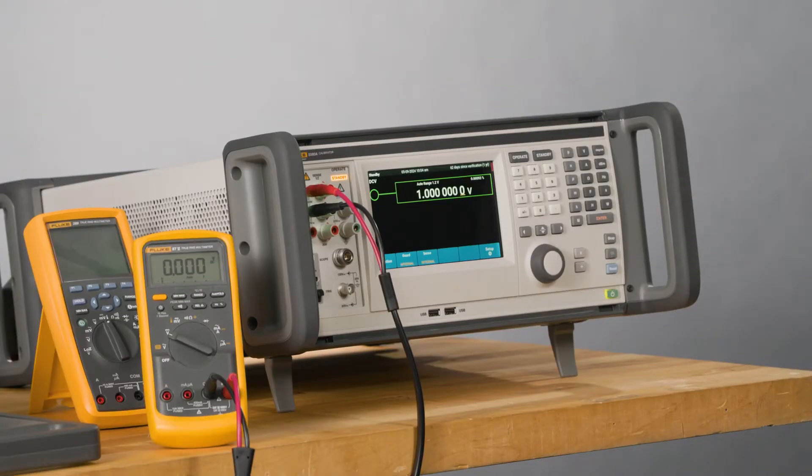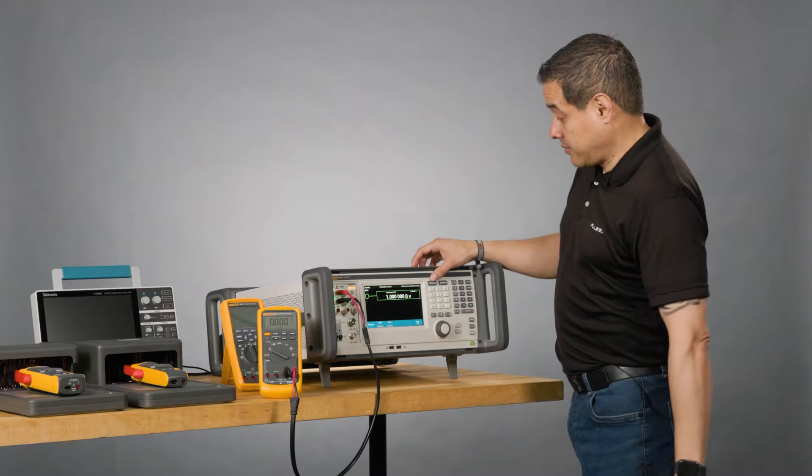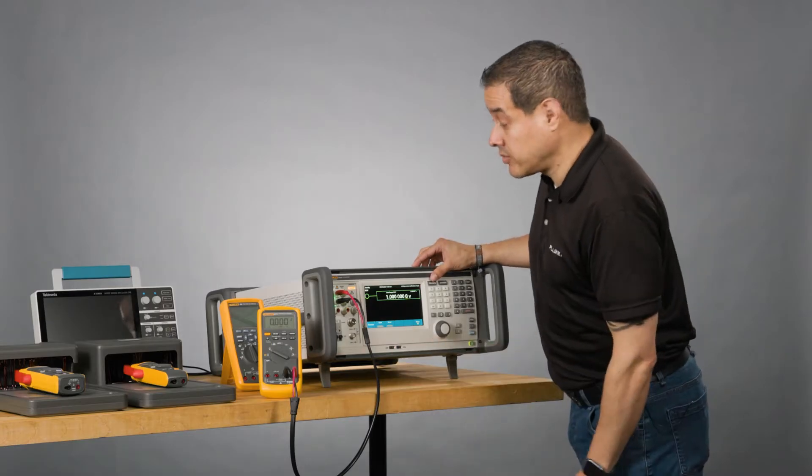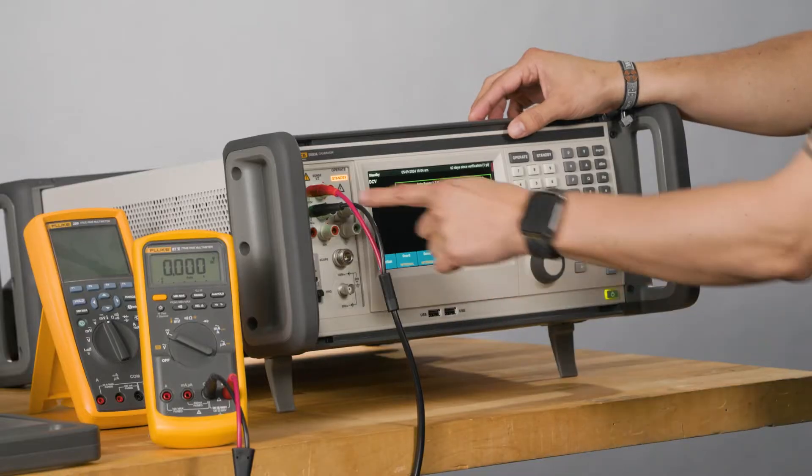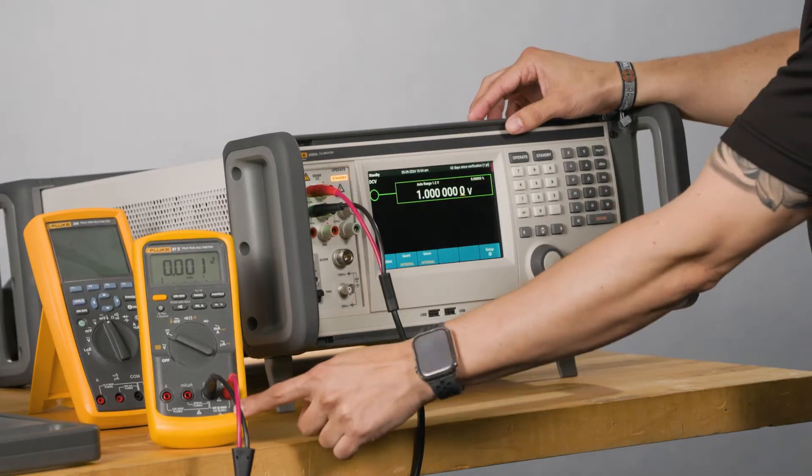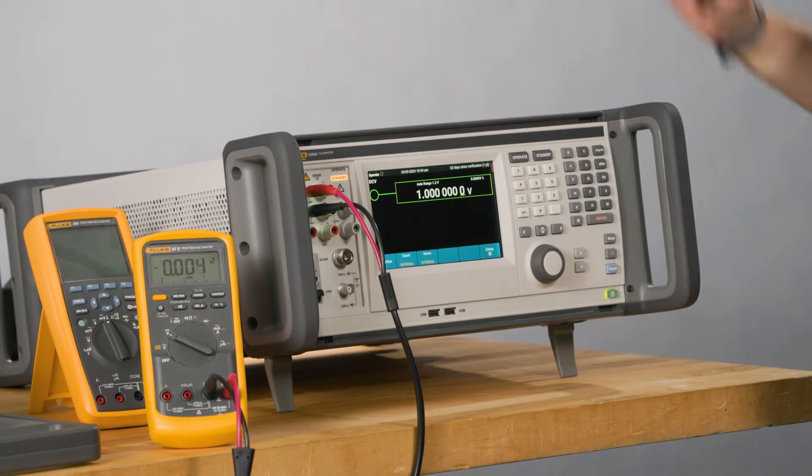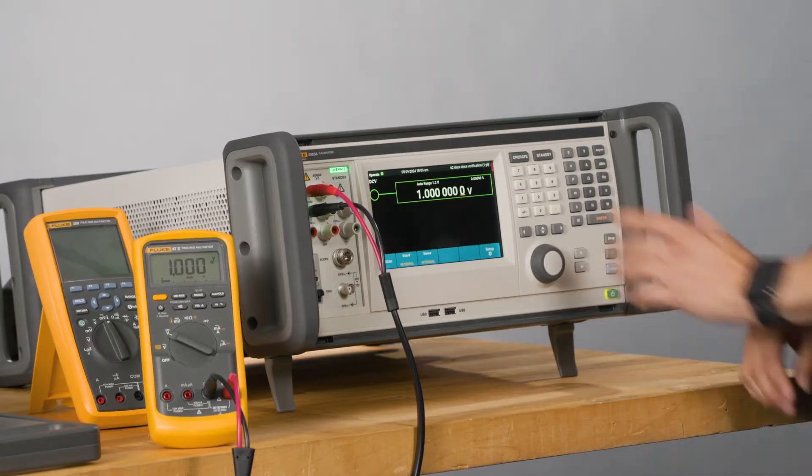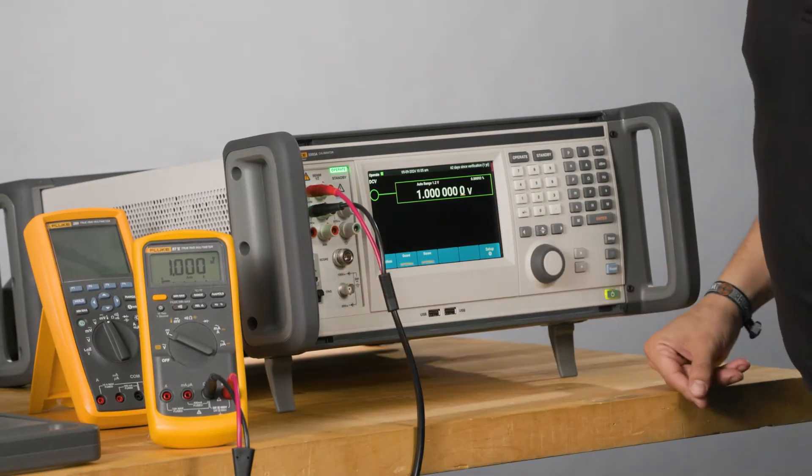Let's calibrate a DMM, in this case an 87.5 in DCV. So first, I need to check the connections. We are ready. Green lights, bulge connection. And I get one volt. Seems to be good.